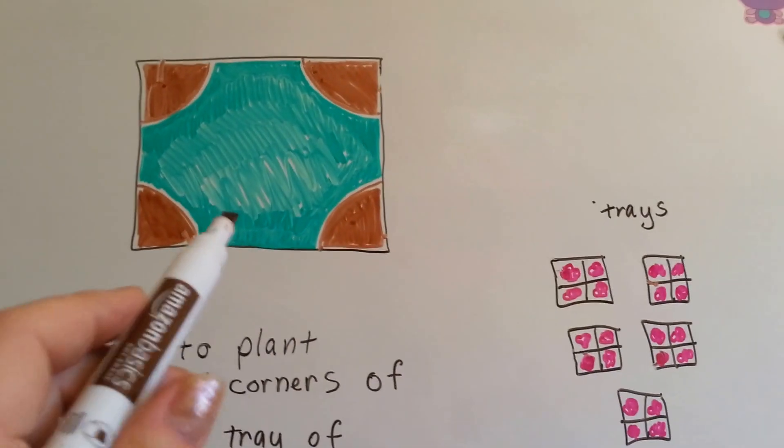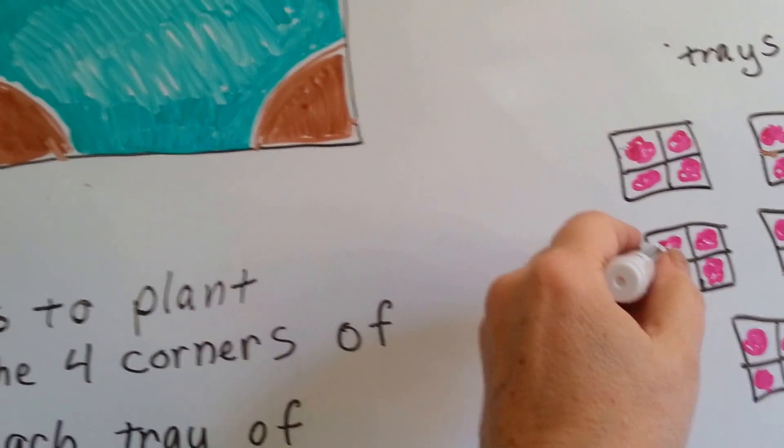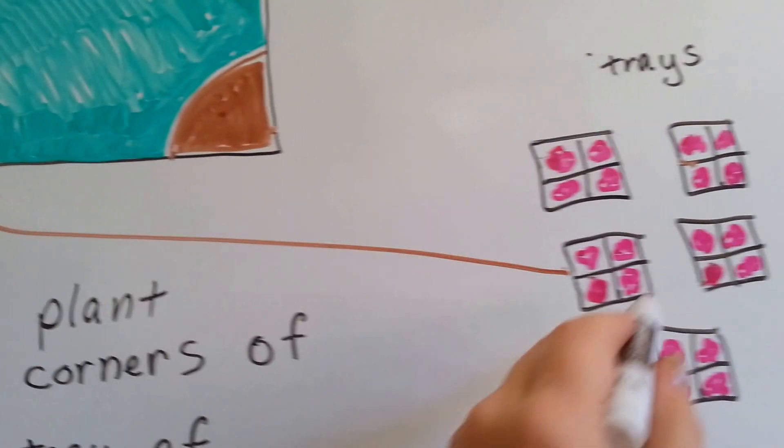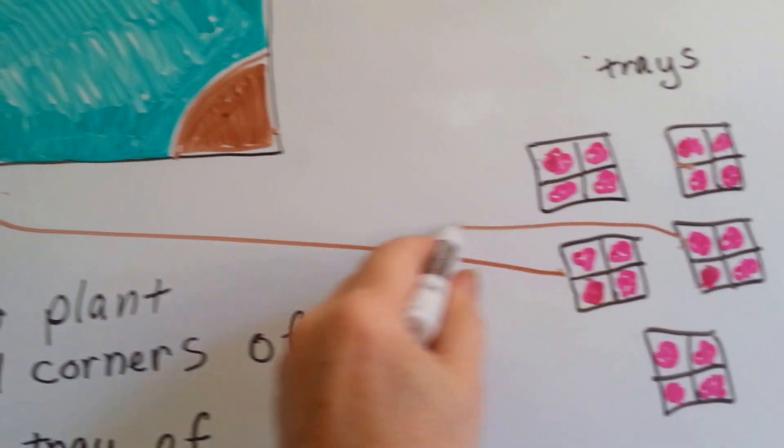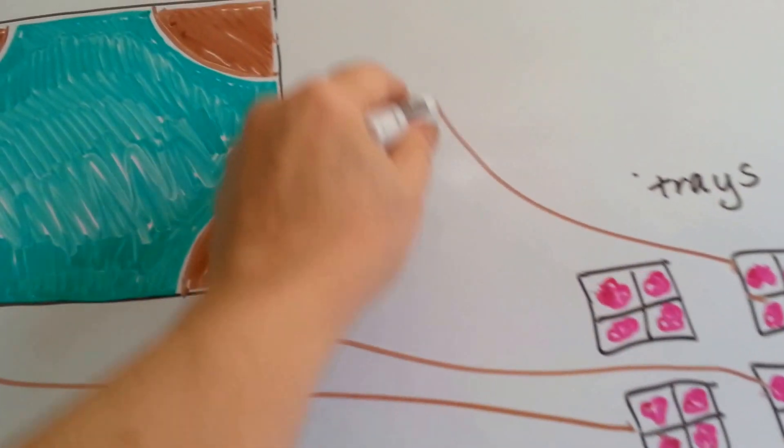So looking at the backyard and looking at the trays, here's what she's going to do. She's going to put this tray in that corner. She's going to put this tray in this corner. She's going to put this tray planted into this corner.